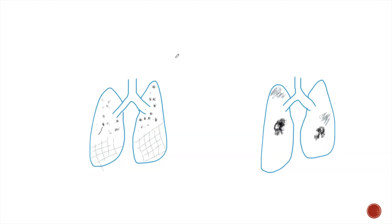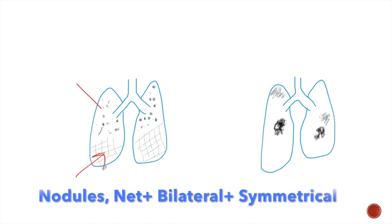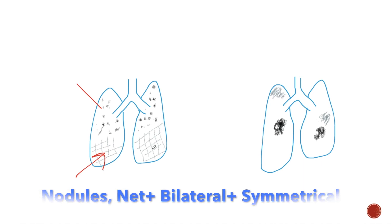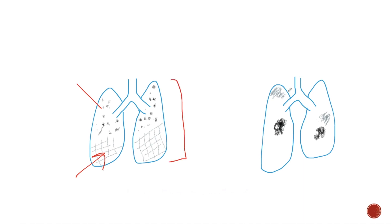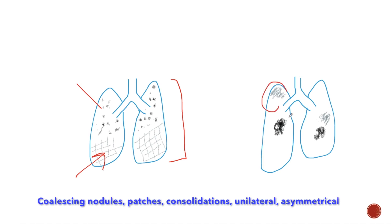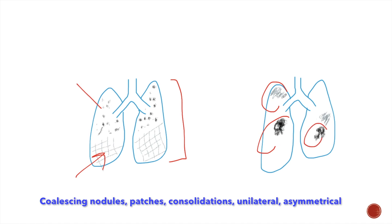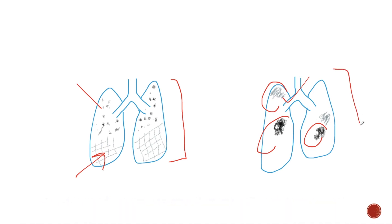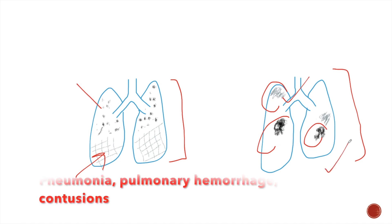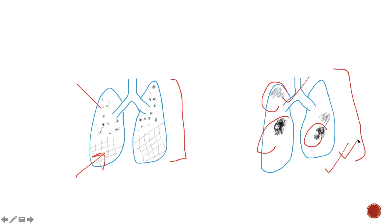These two images sum up what you have learned from this video. Interstitial opacities present with nodules or net-like opacities which are discrete, bilateral, and more or less symmetrical — seen in interstitial lung disease. Alveolar opacities, on the other hand, present with patches and consolidations or coalescing nodules, which are more commonly unilateral but may also be bilateral and are usually asymmetrical — seen in pneumonia, pulmonary hemorrhage, and other diseases that affect the alveoli. Thank you.